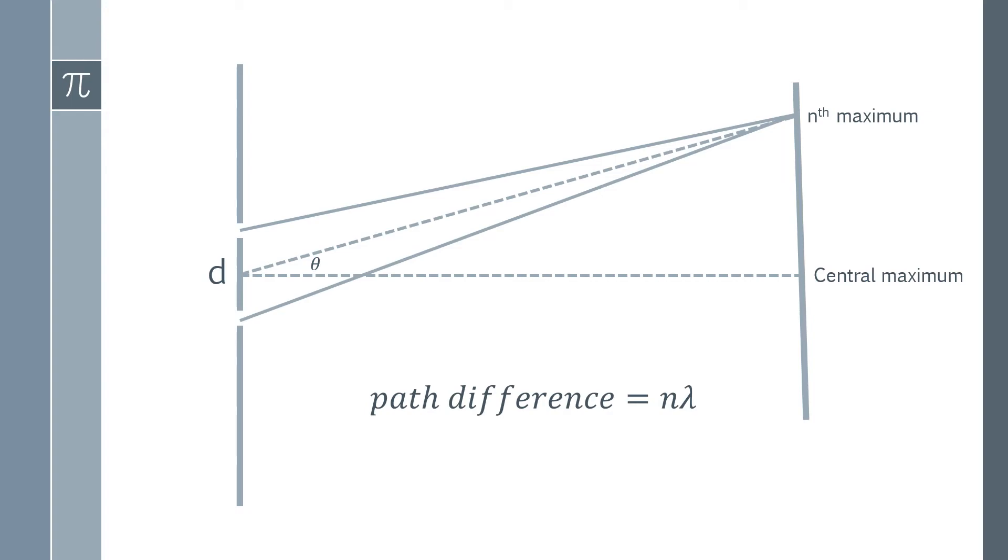That means that n must be one, two, three, four. It can't be anything in between, it has to be an exact whole number multiple of the wavelength. We can work out that this distance marked there must be n lambda. It must be a whole number of wavelengths.